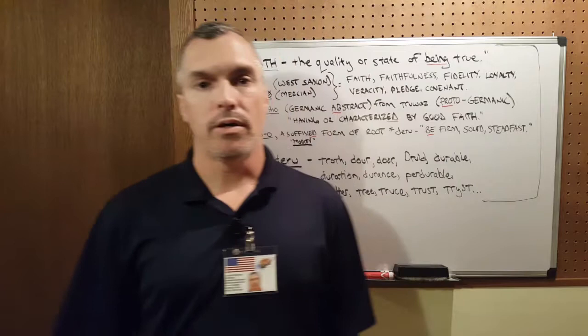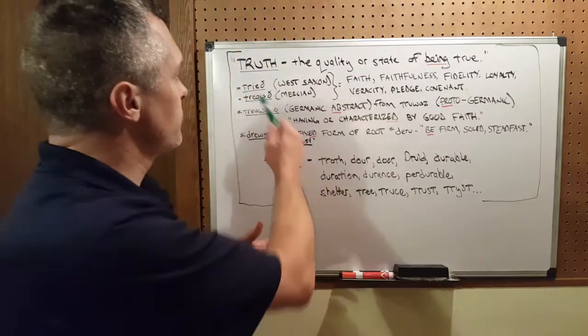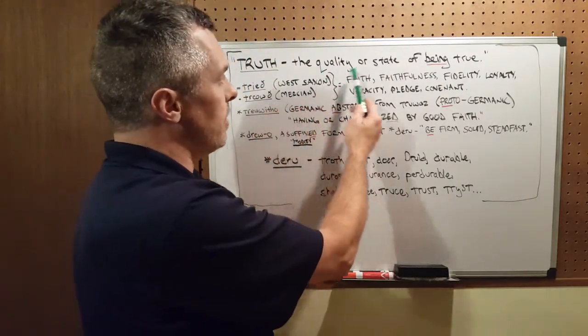I used Google as my only source. I basically just looked up truth, and then Google said it was the quality or state of being true, and then I looked up on Google the keywords in the definition: quality, state, being, and true.